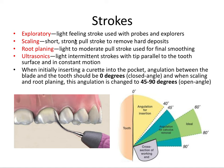The scaling stroke is a short, strong pull stroke used to remove hard deposits — it's the only one out of all four strokes that is a strong pull; all others are light or moderate. Root planing, on the other hand, uses a light to moderate pull stroke for final smoothing, to remove embedded calculus in that rough cementum.